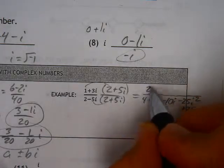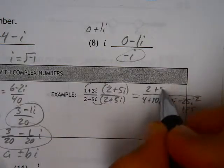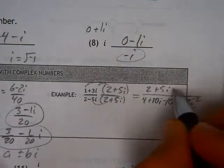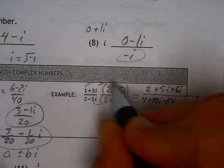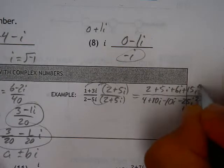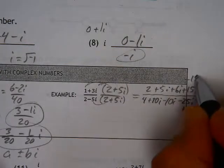We're going to foil that. That's a 2. The outer is a plus 5i. The inner is a plus 6i. The last is a plus 15i squared. That becomes a minus 15.